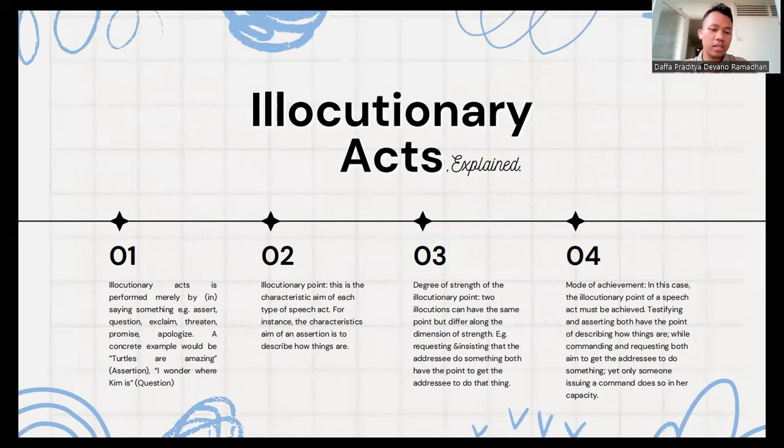Illocutionary point is the characteristic of each type of speech act. For instance, the characteristic aim of an assertion is to describe how things are.